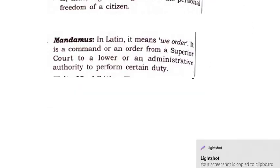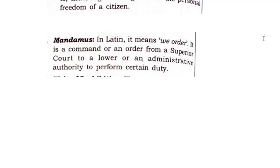Next is mandamus. In Latin, it means 'we order.' It is a command or an order from the superior court to the lower court or an administrative authority to perform a certain duty. If the Supreme Court finds that a lower court has to perform in a certain way, it can issue this writ — mandamus.